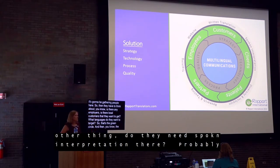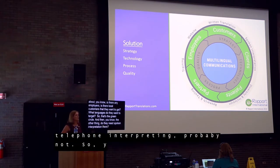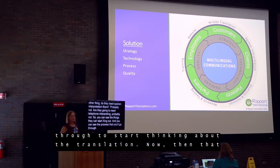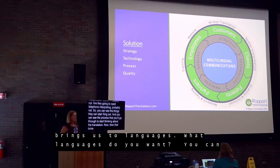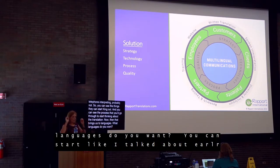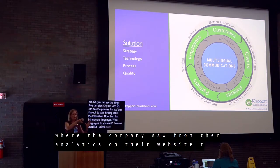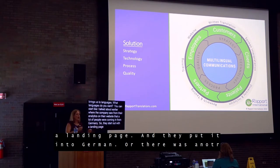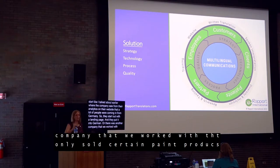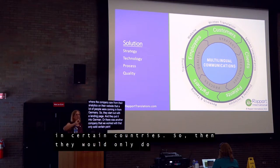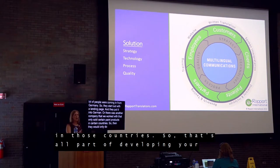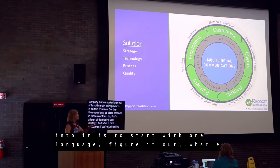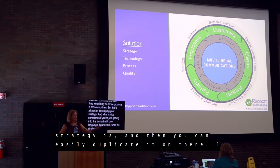For the Children's Museum, they probably don't need spoken interpretation or telephone interpreting, so many options can be crossed off. You can see the process of narrowing down what translation you actually need. You can start where your analytics show people are coming from — say a lot of traffic from Germany, start with a German landing page. Another company we worked with only sold certain paint products in certain countries, so they only translated those products for those markets. It's part of developing your strategy. If you're just getting into it, start with one language, figure out the strategy, then duplicate it.